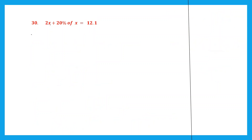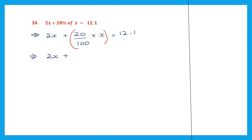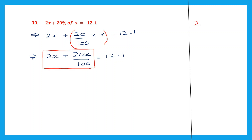Question 30. Let's work this out. So this is 2x plus 20% — 20 by 100. 'Of' means multiply into x. This is equal to 12.1. So now let's work out the multiplication part. So here this will remain the same as 2x. Now here we have 20 into x is 20x by 100. This is equal to 12.1.